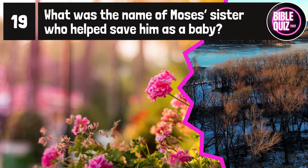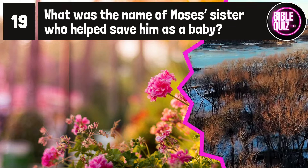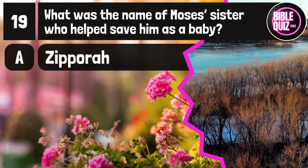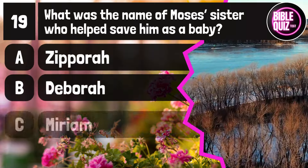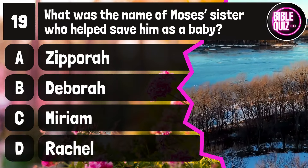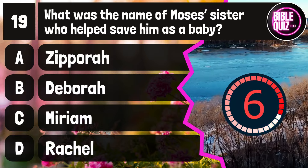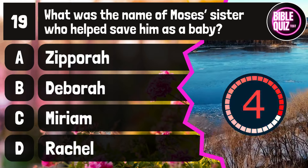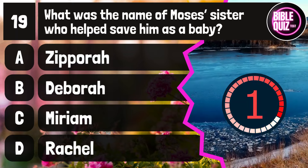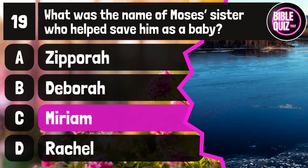Question number 19. What was the name of Moses' sister who helped save him as a baby? Option A: Zipporah. Option B: Deborah. Option C: Miriam. Option D: Rachel. Time to think. The answer is option C: Miriam.